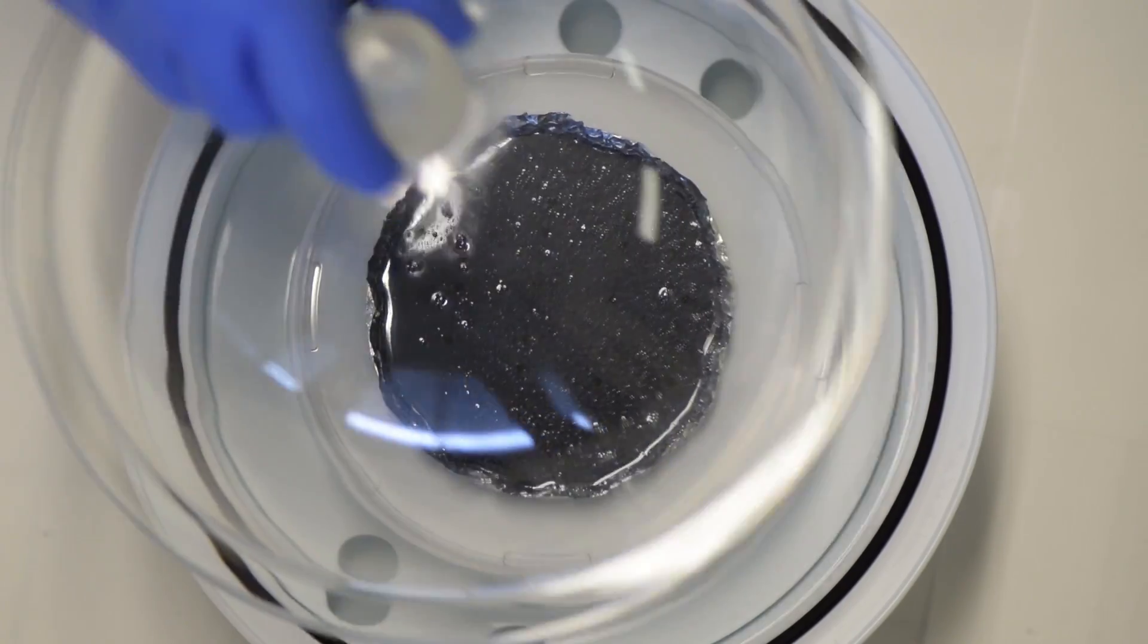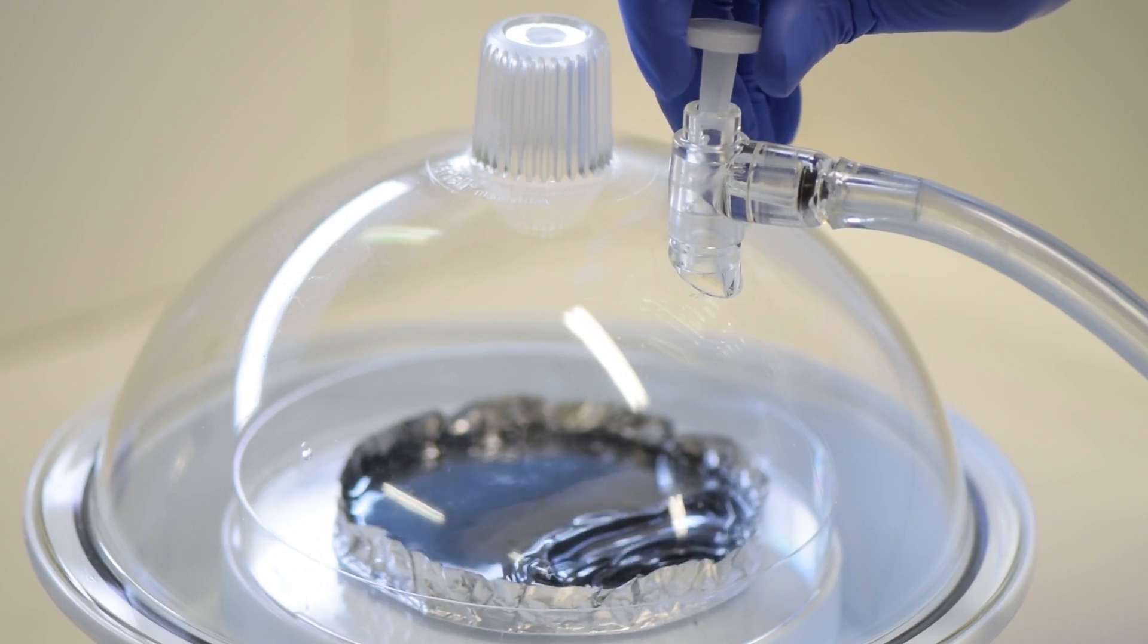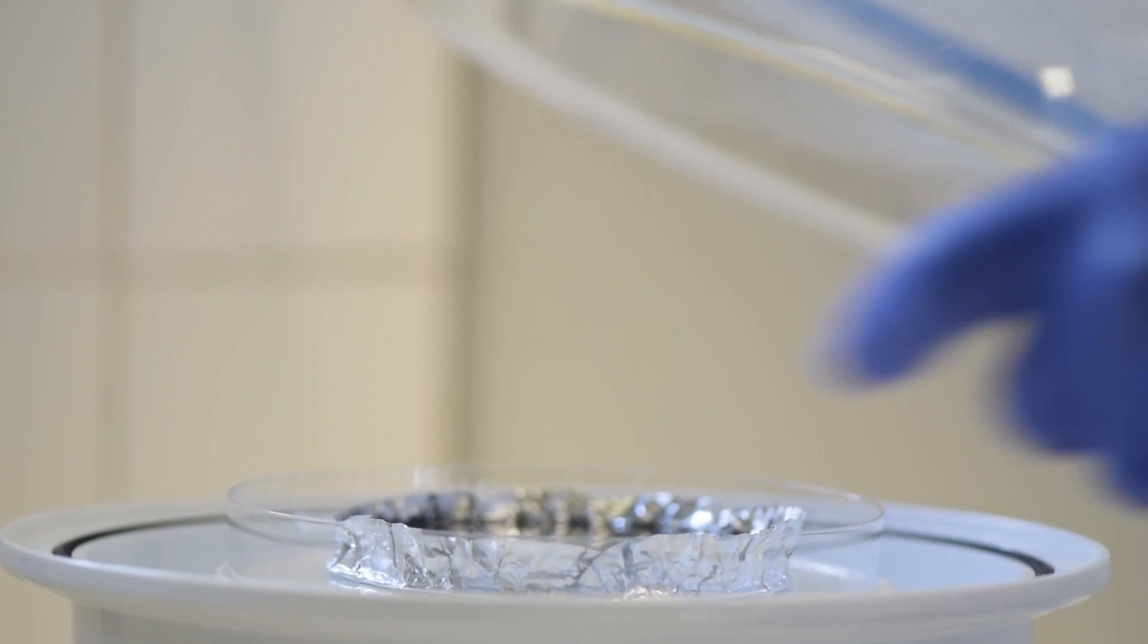The whole setup is put under a vacuum bell to eliminate air bubbles, and then we wait for about 10 minutes. Once the bubbles are gone, we take the PDMS and put it in a heated enclosure to speed up cross-linking.